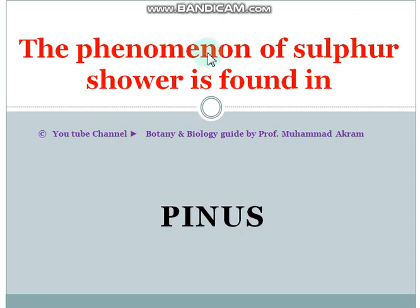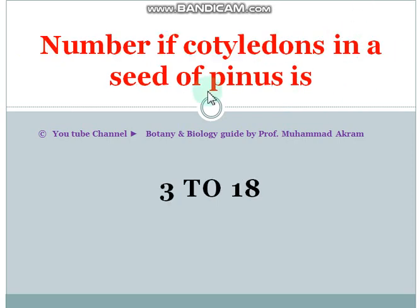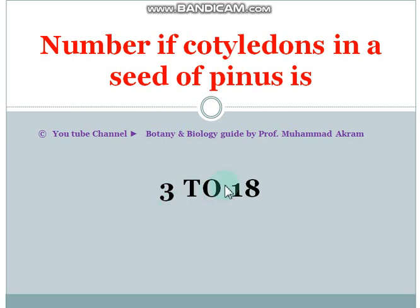The phenomenon of sulfur shower is found in the plant Pinus. Pinus is a gymnosperm, and in this plant the phenomenon of sulfur shower occurs. The number of cotyledons in a seed of Pinus ranges from 3 to 18. Gymnosperms are not simply monocotyledon or dicotyledon — in Pinus, cotyledons vary from 3 to 18.